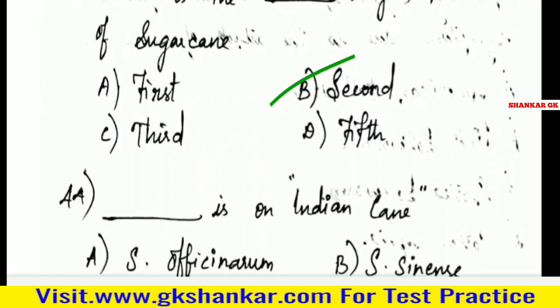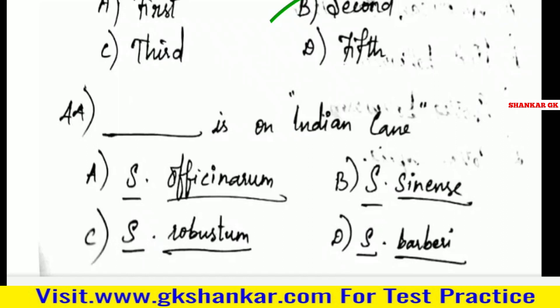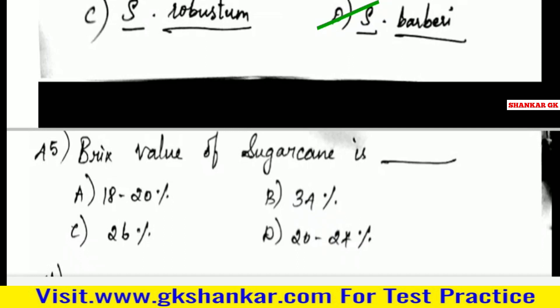Forty-fourth question: Indian cane — A. Saccharum officinarum, B. Saccharum sinense, C. Saccharum robustum, D. Saccharum barberi.